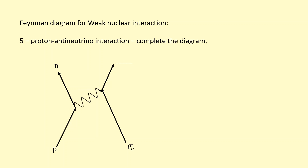In the proton-antineutrino interaction, the proton is turning into a neutron. To conserve charge it emits its positiveness via the W-plus exchange boson. That W-plus is going to turn into a positron, which is required to conserve both charge and lepton number. The lepton number at the start, due to the antineutrino, is minus one. And it's minus one at the top as well, because we have an antielectron — a positron — at the top right.